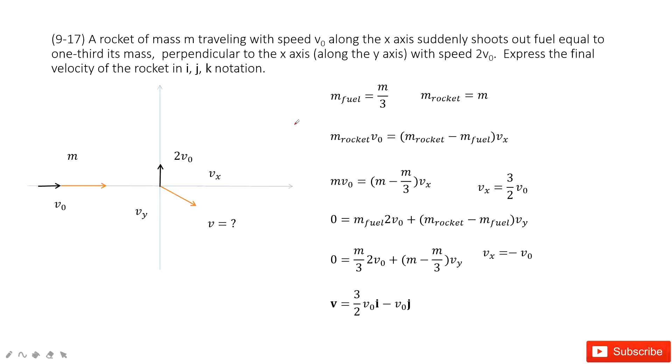This problem is a typical application about linear momentum conservation in two directions. In this one we have a rocket with mass m, and this rocket has one third of its mass as fuel. We can see this black part is fuel. The orange part is the rest of the rocket.